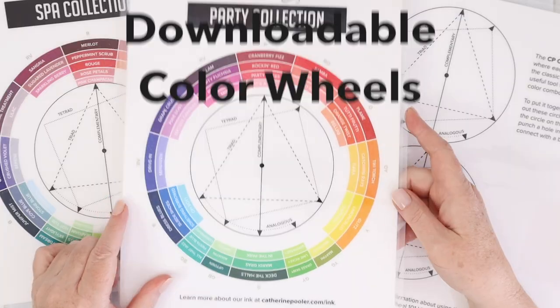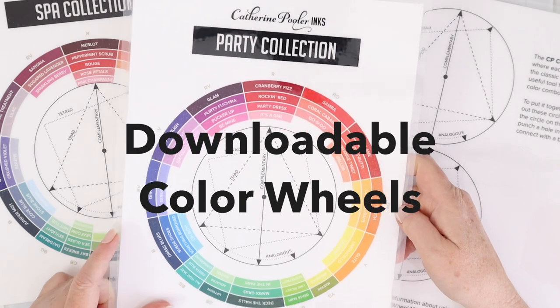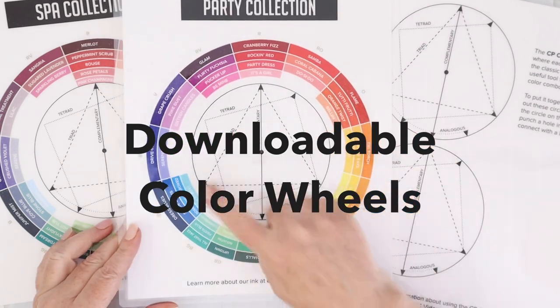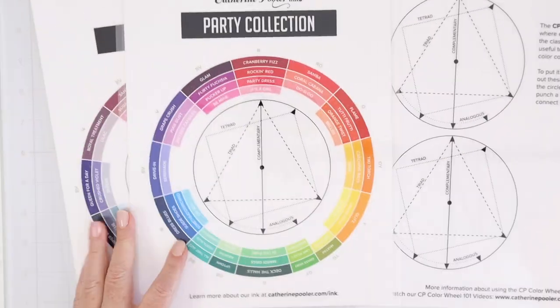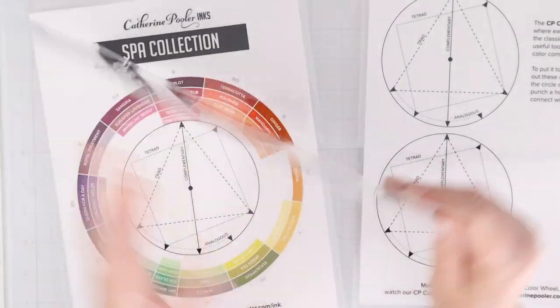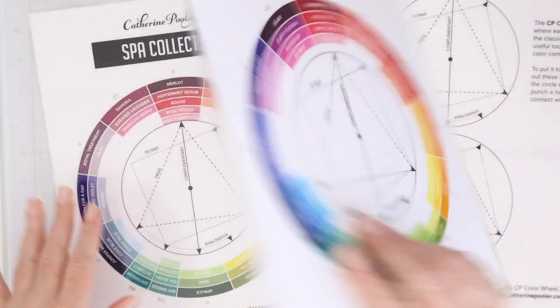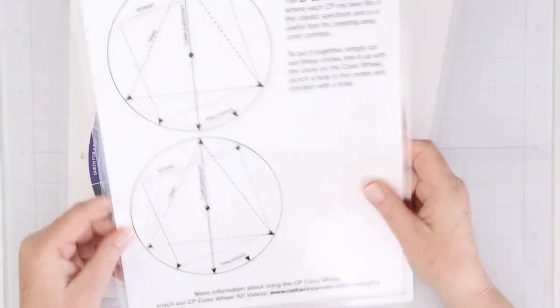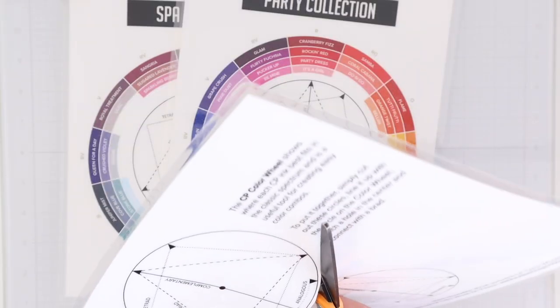First up, you can download the Catherine Pooler ink color wheels on their website. They have one for Party Collection and one for Spa Collection, and all the inks they have are in either of those collections.